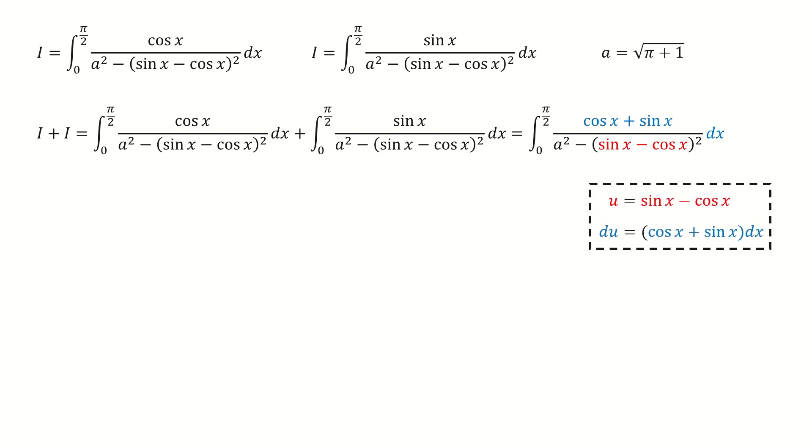Then we make another substitution. We let u equals sine x minus cosine x, and then we take the derivative to find du. After plugging in the substitution, we got here.